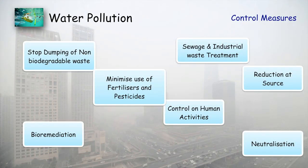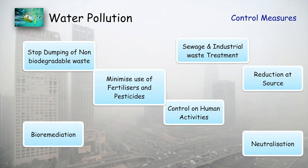To control water pollution: stop dumping non-biodegradable waste and go for recycling. Use bioremediation — biological methods for cleaning water bodies, like using bacteria that can consume dirt from water. Minimize the use of fertilizers and pesticides. Control human activities including customs and traditions. Implement sewage and industrial waste treatment plants, reduction at source, and neutralization of waste material.